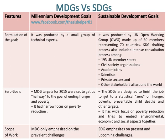SDGs have a wide focus on poverty reduction and try to embed environmental, economic and social aspects together. Scope of work in MDGs only emphasized on the prevalent challenges, whereas scope of work in SDGs emphasizes on present and upcoming challenges.